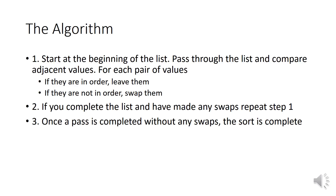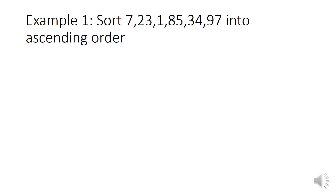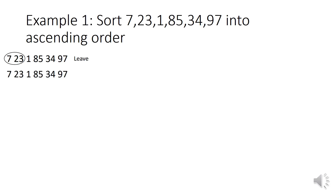I'm going to go through a few examples and work through them. Example one: sort the list 7, 23, 1, 85, 34 and 97 into ascending order. First I'm going to write out the list of numbers so that it's easier to work with. We need to look at the first pair of values, so that's 7 and 23. As you can see it's already in ascending order so we'll say it's sorted and leave it how it is. When we write out the list again nothing is changed.